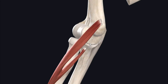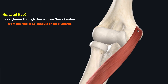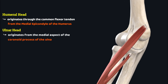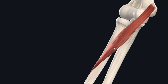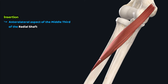The pronator teres muscle has two heads of origin: a superficial humeral head and a deep ulnar head. The humeral head originates through the common flexor tendon from the medial epicondyle of the humerus. The ulnar head lies deep to the humeral head and originates from the medial aspect of the coronoid process of the ulna. These two heads converge to form a single muscle belly which travels inferolaterally to insert through a flat tendon onto the anterolateral aspect of the middle third of the radial shaft.